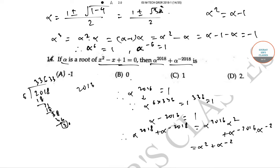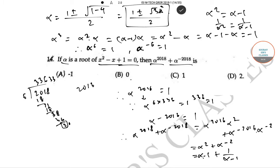Now α² = α - 1, and α^(-2) = 1/(α - 1). Inverting both sides of α² = α - 1 gives α^(-2) = 1/(α - 1). Substituting the value of α, the expression evaluates to 0. So the correct answer is option B, that is 0.